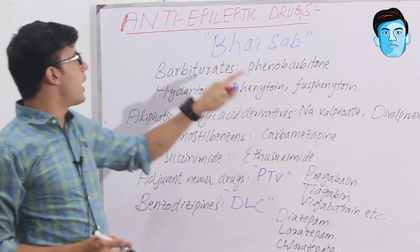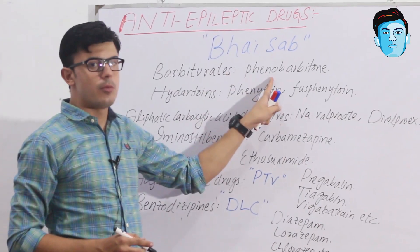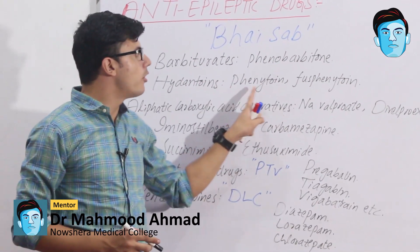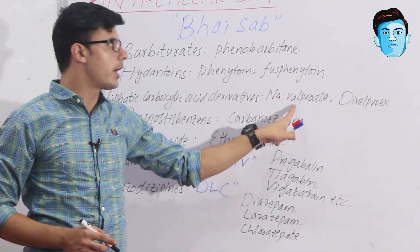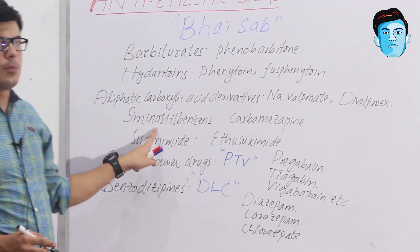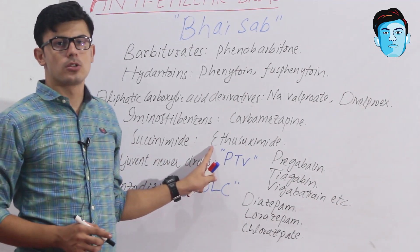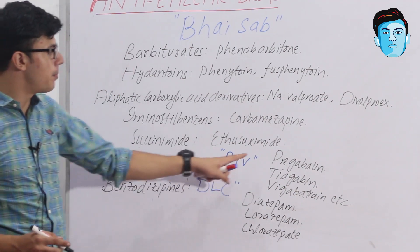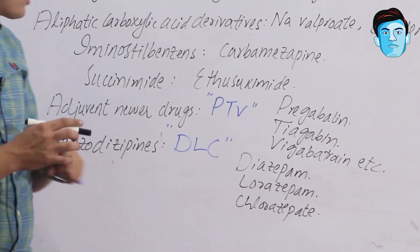To recap the full mnemonic BY SAAB: B stands for barbiturates containing phenobarbitone; H stands for hydantoins containing phenytoin and fosphenytoin; A stands for aliphatic carboxylic acid derivatives containing sodium valproate and divalproex; I stands for iminostilbenes containing carbamazepine; A stands for succinimides containing ethosuximide; A stands for adjuvant newer anti-epileptic drugs including pregabalin, tiagabine, and vigabatrin; and B stands for benzodiazepines — diazepam, lorazepam, and clorazepate.